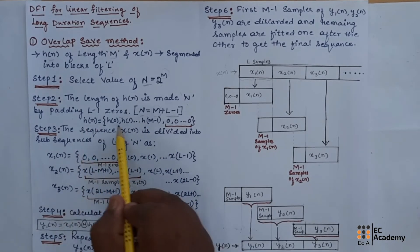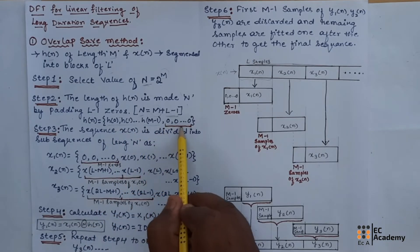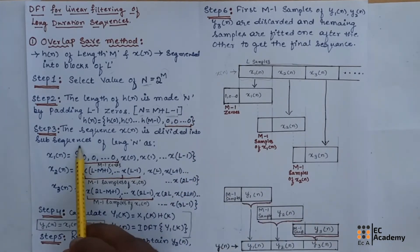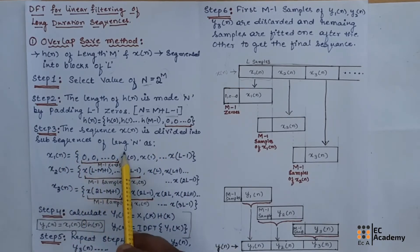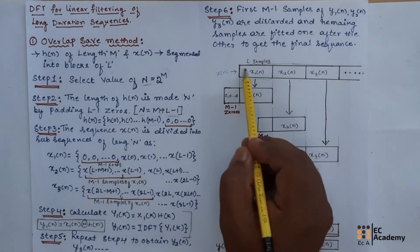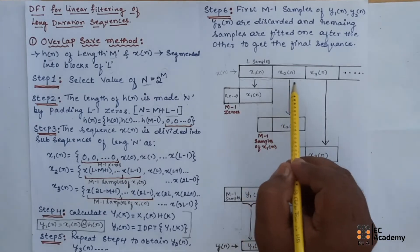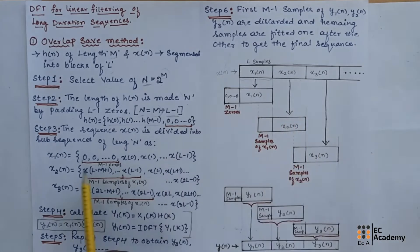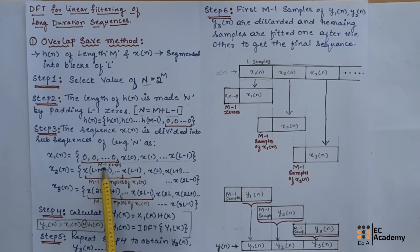So we will take h(n), write the samples of h(n), and pad l minus 1 zeros. That is the second step. In the third step, the sequence x(n) is divided into subsequences of length N. We take the long duration sequence and subdivide it into subsequences or blocks: x1, x2, x3. For x1, we will take l number of samples and append m minus 1 zeros.